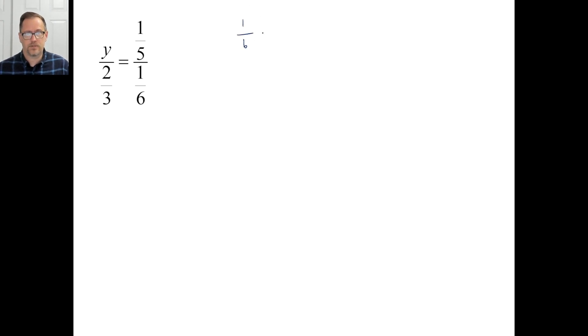All right. We have 1 sixth on top times y. And then 2 thirds times a fifth. So that's going to be 2 on top. And then let's see, 5 on the bottom. And then we're going to multiply by 6 over 1. So that gets rid of that. And that'd be 6 over 1. So now we have a 6 and the 15. 3 go into both of those. That goes 5 times and it goes 2 times. So y is equal to 4 fifths. There we go. All right. Pause it and try C.